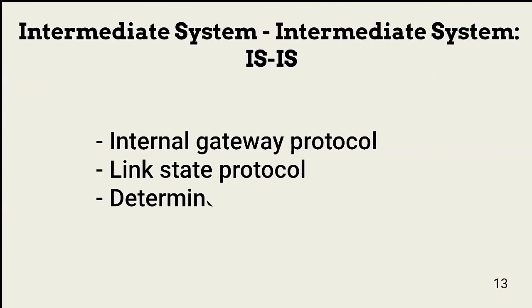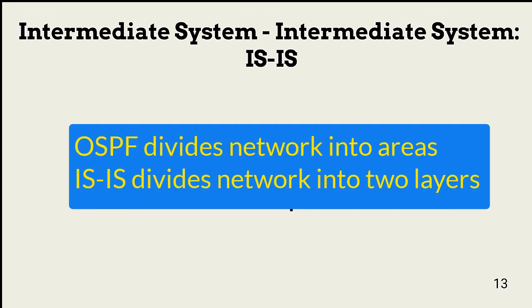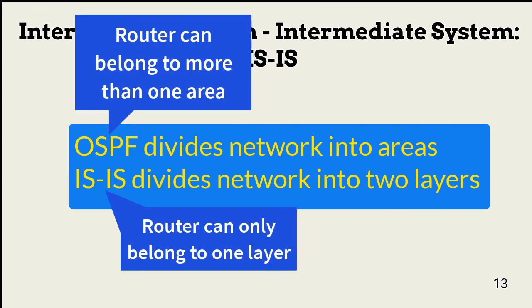Last but not least, IS-IS is a link state internal gateway protocol that uses an approach similar to OSPF. The differences between IS-IS and OSPF are in how the protocols divide the network. OSPF divides the network into areas and sends advertisements based on these areas, while IS-IS categorizes the routing domain into two layers. An OSPF router can belong to multiple areas, but an IS-IS router can belong to only one.